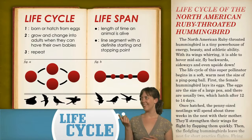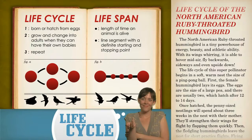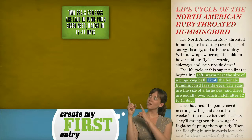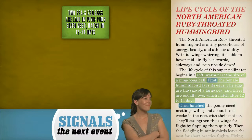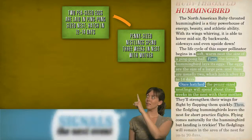A new life cycle begins when the baby is born or hatched from an egg. This is different from life span, which is the length of time an animal is alive. A line segment with a definite starting and stopping point best represents life span. Back to my cycle map. I create my first entry: two pea-sized eggs are laid in a ping-pong-sized nest that hatch in 12 to 14 days. From the signal words 'once hatched,' I understand that I'll read about the next event. The penny-sized nestlings spend three weeks in the nest with their mother.